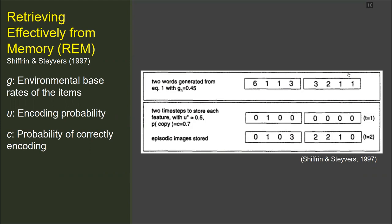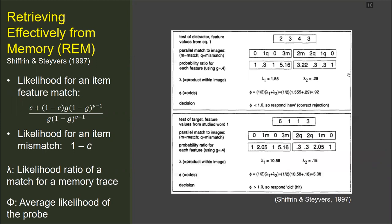According to REM, the items are represented as vectors of features. The item features are positive integers sampled from a geometric distribution. According to the model, encoding to memory is a probabilistic and error-prone process. In a recognition test, the probe is compared to all the memory traces.